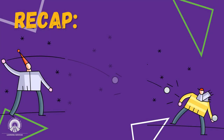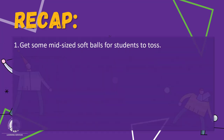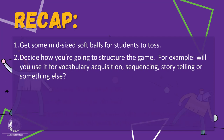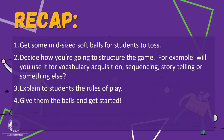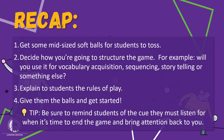Let's recap how to play the snowball game. First, get some small or medium-sized soft balls and then decide how you're going to structure the game — is it going to be for vocabulary acquisition, sequencing, or storytelling? You have lots of options. Explain to students the rules of play depending on the structure you've decided. Then give the kids the balls and get them started. And Jennifer's number one tip is to have a routine cue to bring the focus back when the game is over — it could be a timer chime or a signal word.